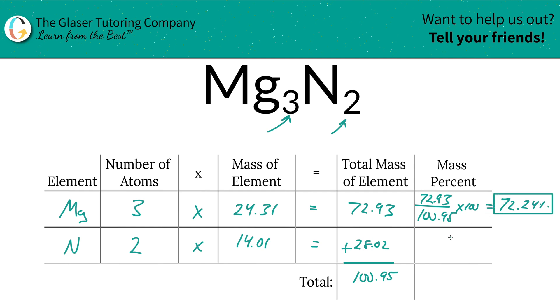And then we're going to do the same thing for nitrogen. Total mass of nitrogen—the total, not the atomic or the molecular mass or the molar mass, the total. 28.02 divided by 100.95.